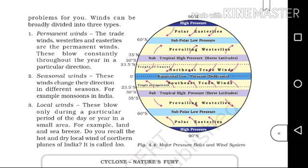Seasonal winds change their direction in different seasons. For example, monsoons in India change direction with the season.